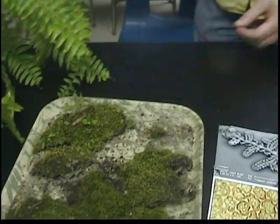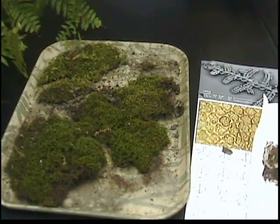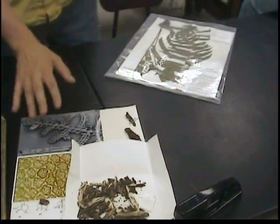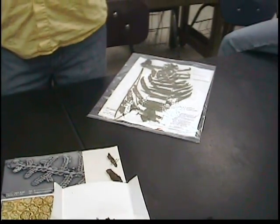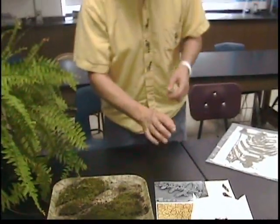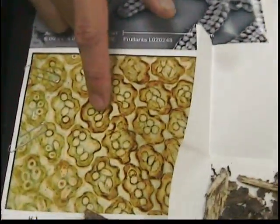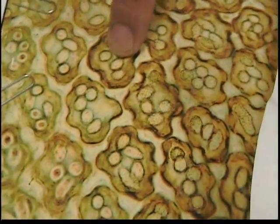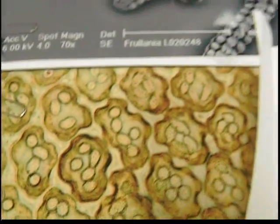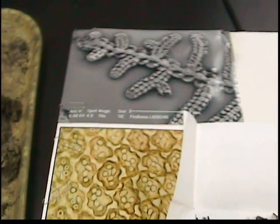Another key difference involves microscopic features. In mosses, they have a midrib or vein in the leaf; liverworts have no such structure at all. One final really neat differentiating feature is cellular: liverworts contain structures called oil bodies inside the cells of their leaves, and these don't exist in any other plant group at all — they're unique to liverworts.